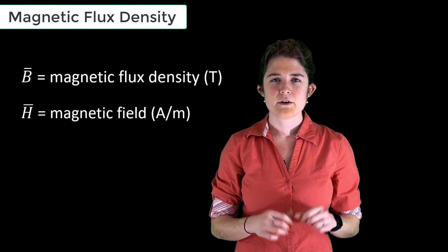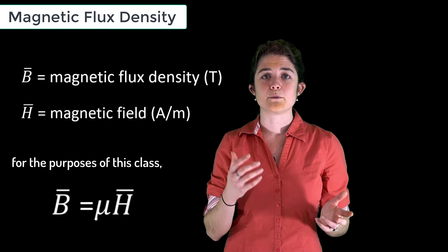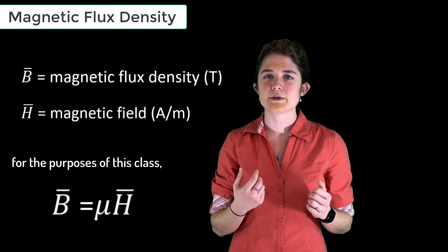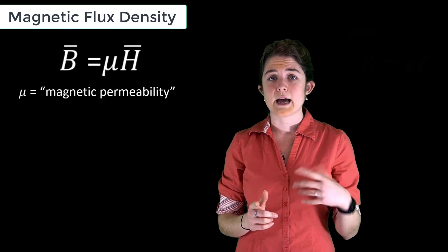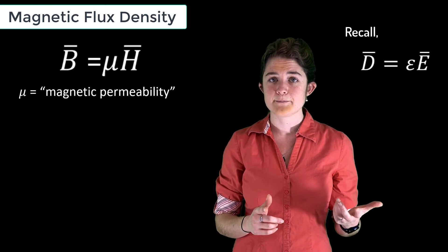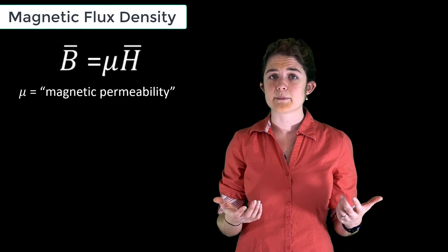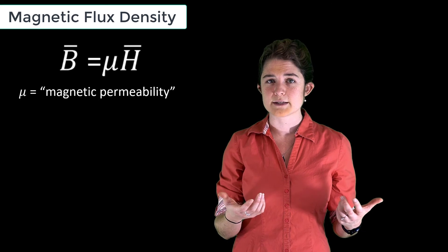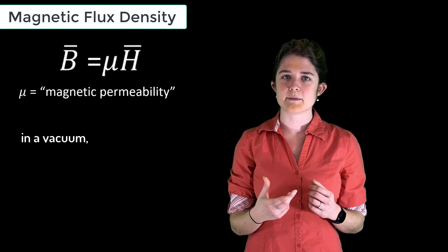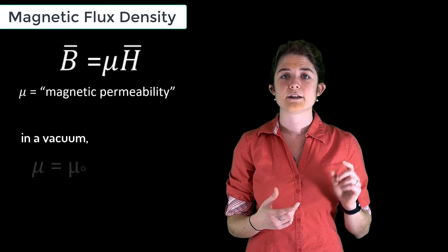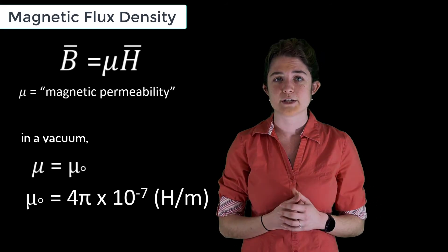For the purposes of this class, we will use the simple relationship B equals mu H, where mu is the magnetic permeability. This is the magnetic corollary to epsilon, the electric permittivity. Like permittivity, permeability is a material property that models atomic responses to applied fields. For the case of fields in a vacuum, the permeability is given as the physical constant mu naught, equal to 4 pi times 10 to the negative 7 henries per meter.